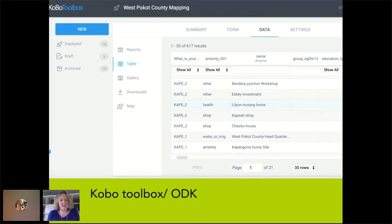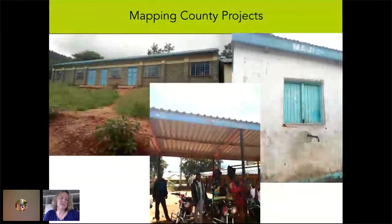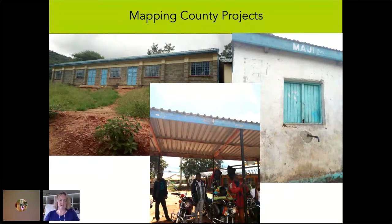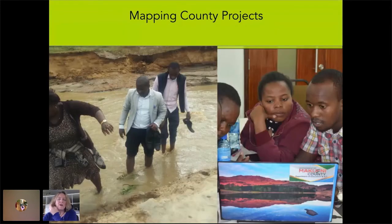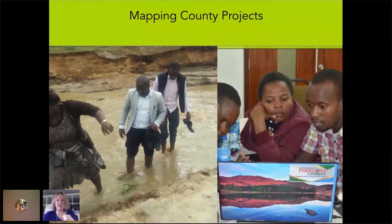We used Kobo Toolbox, which is basically a way to interface with Open Data Kit, and that was our mechanism to create an extensive survey of the projects that had been budgeted. For example, on the left is a school, on the right is a water point, and on the bottom is a boda boda shed — a cover for the place where they would provide motorcycle taxis. Our approach is always to involve citizens and data together in both the gathering, the editing, the deciding what to do with the data, and making use of it.